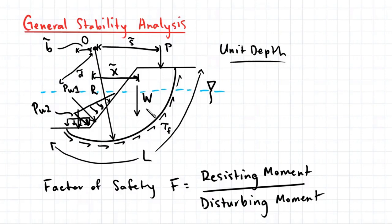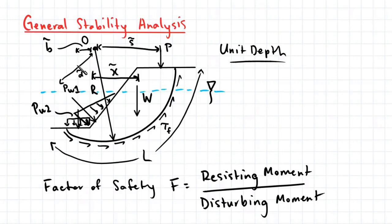We're also interested in the distance which these forces act away from the center of the slip circle. The distance from the surcharge force to the center is represented by S. The distance from the weight force of the soil element from the center is represented by X. The distance from the pore water pressure force Pw1 is represented by D, and the distance from the second pore water pressure force Pw2 is represented by B.